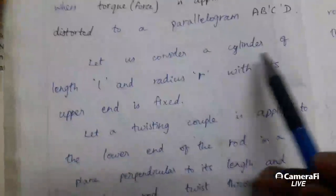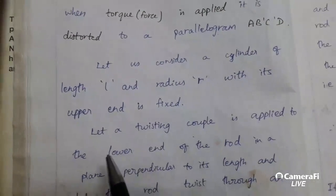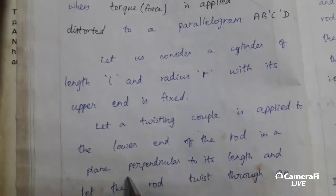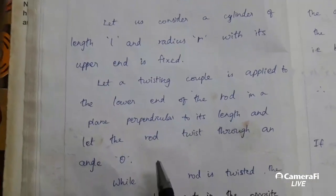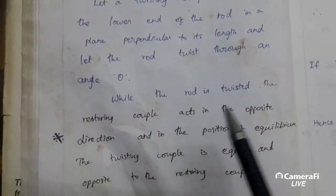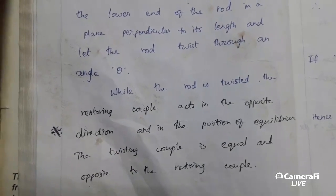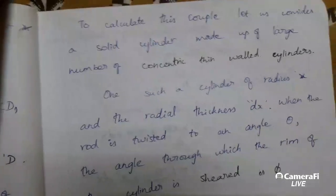Then let us consider a cylinder of length L and radius R, with its upper end fixed. Let a twisting couple be applied to the lower end of the rod in a plane perpendicular to its length, and the rod twists through an angle theta. While the rod is twisted, the restoring couple acts in the opposite direction. And in the position of equilibrium, the twisting couple is equal and opposite to the restoring couple.